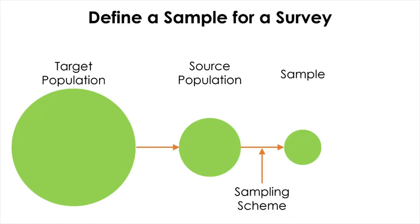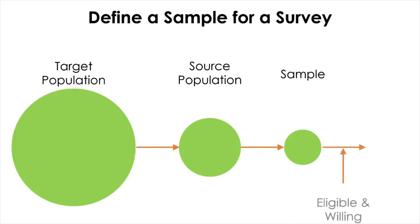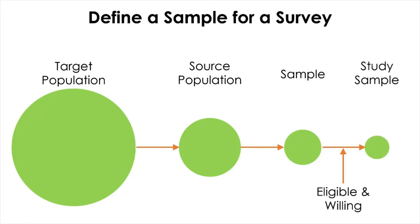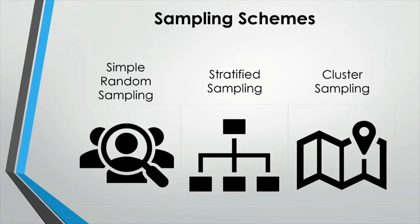From this sample, the final study participants will be determined, because not everyone in the selected sample will end up participating in the study. Some subjects will refuse to participate despite all reasonable efforts. Others will have moved out of the area or even died. The final participants are usually a subset of the initial sample who are eligible and willing. A sampling scheme is a detailed description of what data will be obtained and how this will be done.